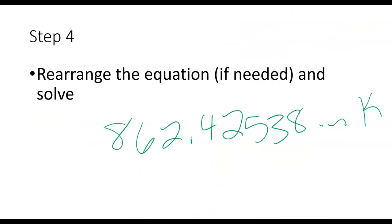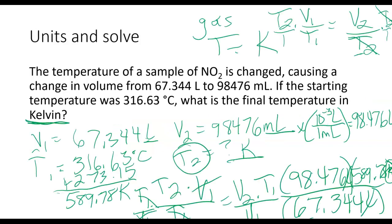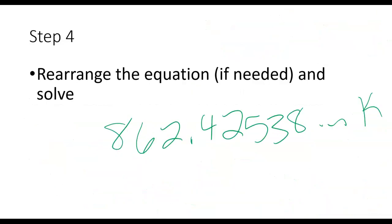Now I need to make sure and round this for significant figures. If I look at my problem, I have five significant figures throughout. So I'm going to round this to five significant figures. So I'm going to get 862.43 Kelvin.